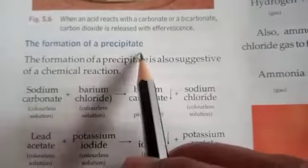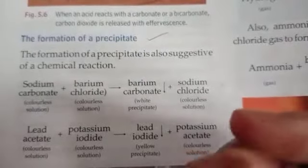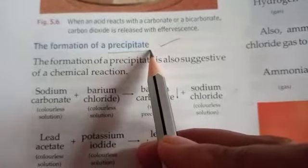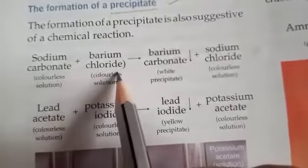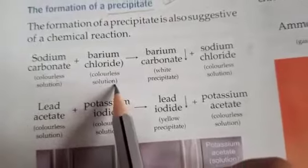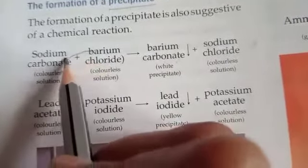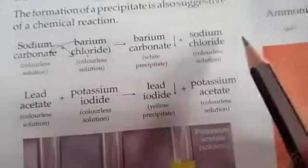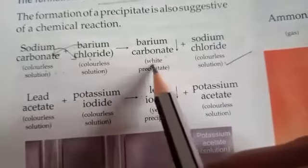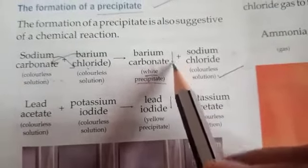Next is formation of precipitate. A precipitate is an insoluble solid substance. When we mix one solution into another, we can separate the precipitate with filter paper. For example, sodium carbonate reacts with barium chloride — both are colorless solutions — and they form barium carbonate and sodium chloride. A white precipitate of barium carbonate forms, so a downward arrow is placed with it.